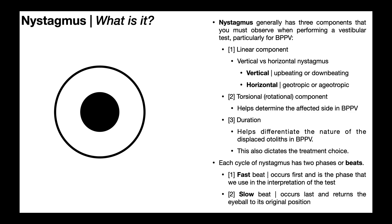Nystagmus will generally have three components: number one, a linear component; number two, a torsional component, which is just rotation; and number three, a duration, which is the time from the onset of the nystagmus to the time it fatigues or stops. We'll be looking at the interpretation of duration in the next video, but understand that it helps differentiate the nature of the displaced otoliths.